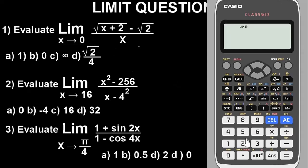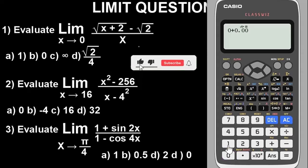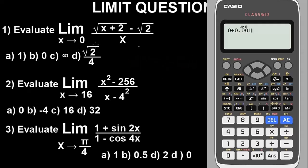Since the limit is approaching zero, you press zero plus 0.001. This constant is 0.001. Because the limit is turning to zero, we use zero plus 0.001. If the limit was turning to two, we would use two plus 0.001. Since it's turning to zero, we use zero plus 0.001. Very important.